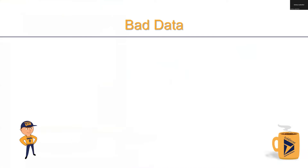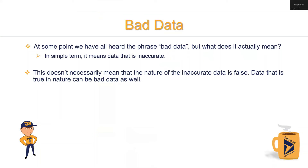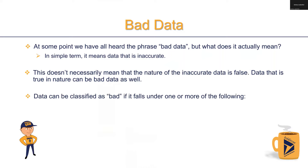First let's talk about bad data. At some point we've all heard the phrase bad data, but what does it actually mean? In simple terms, it means that data is inaccurate. Now this doesn't necessarily mean that the nature of the inaccurate data is false. Data that is true in nature can be classified as bad data as well. Data can be classified as bad if it is one or more of the following.